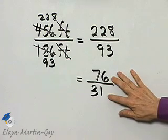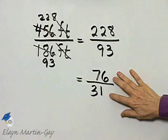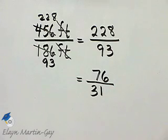And then this is in simplest form. So the ratio of the length in simplest form written as a fraction is 76 to 31 or 76 over 31.